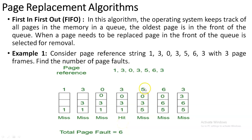The fifth string is 5. We check whether 5 exists — zero, three, and one are in the frame, but five is not, so it is a miss. Now we need to decide where to insert five. As per the FIFO algorithm, the page inserted first should be removed first. Zero was recently inserted, three was inserted before zero, and one was the first inserted. So we replace page 1 with page 5.